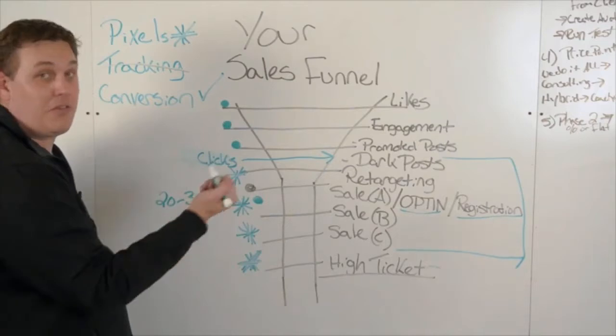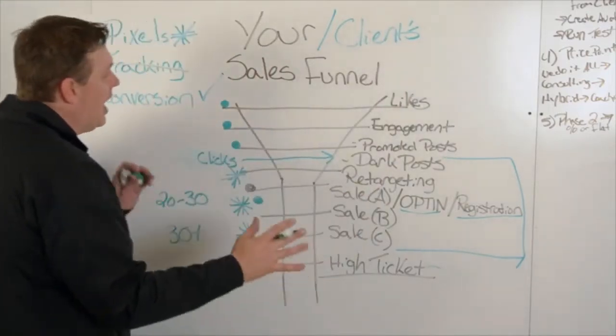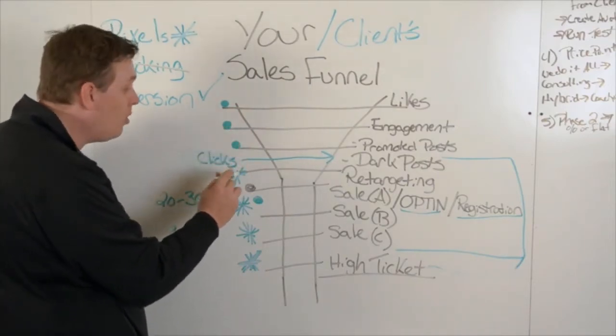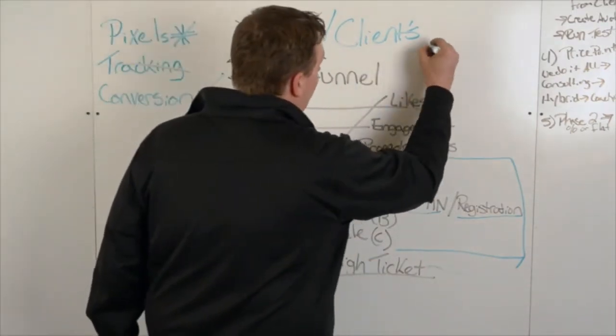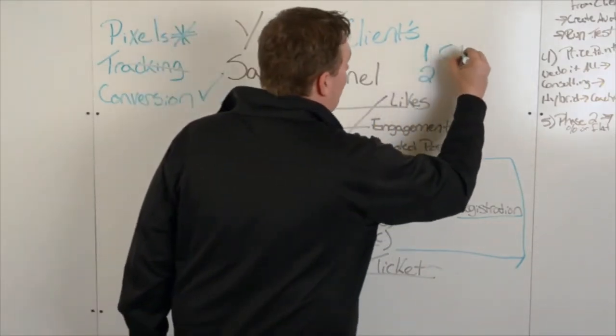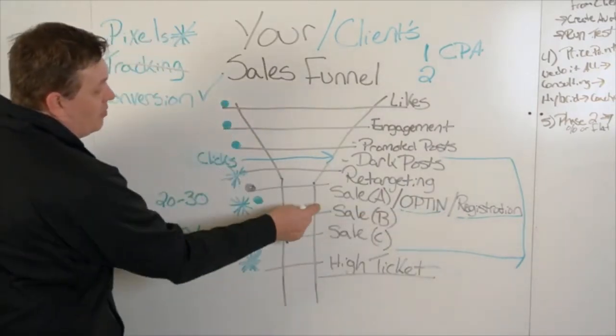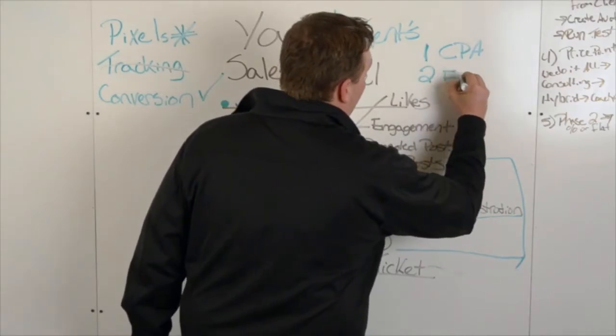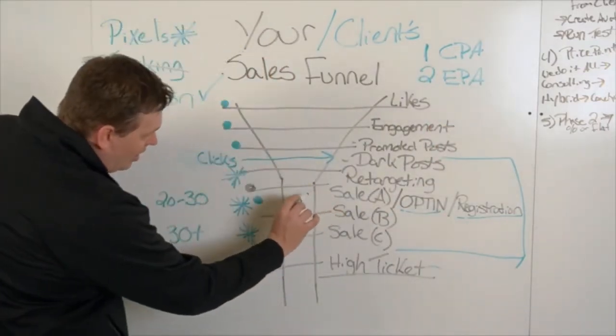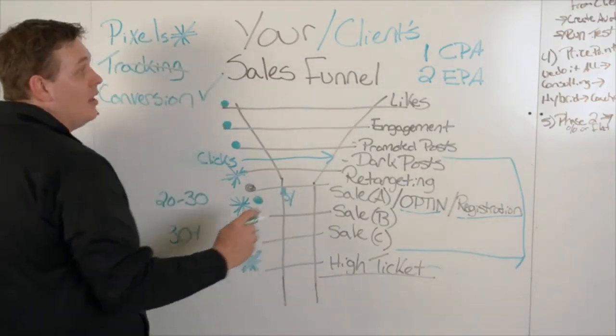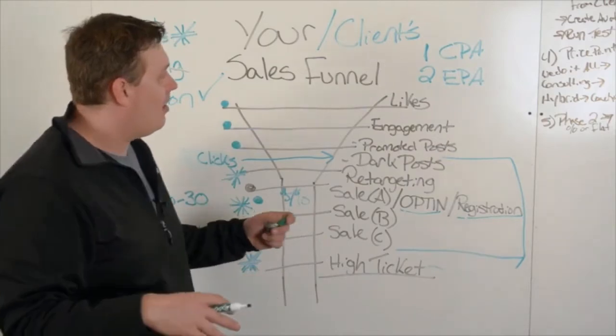This can be for your personal funnel. This could be for a client. This is what seven and eight figure clients pay us for. Because what happens is we know how to get likes, we know how to get that engagement, we know how to run those promoted posts, we run the dark post into an offer. However, we start finding out, remember there's only two numbers that I care about, just two. One, CPA, cost per acquisition. I want to know how much does it cost for me to get a sale and opt-in, a registration? How much does it cost for me to get a sale? Now, EPA, this is my earnings per acquisition. I want to know if it cost me $5 to get an opt-in, but on every opt-in I average $10 in revenue for my sales funnel.